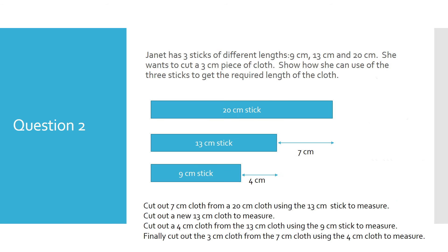Cut out 7 centimeters cloth from a 20 centimeters cloth using the 13 centimeters stick to measure. Cut out a new 13 centimeters cloth to measure. Cut out a 4 centimeters cloth from the 13 centimeters cloth using the 9 centimeters stick to measure. Finally cut out the 3 centimeters cloth from the 7 centimeters cloth using the 4 centimeters cloth to measure.